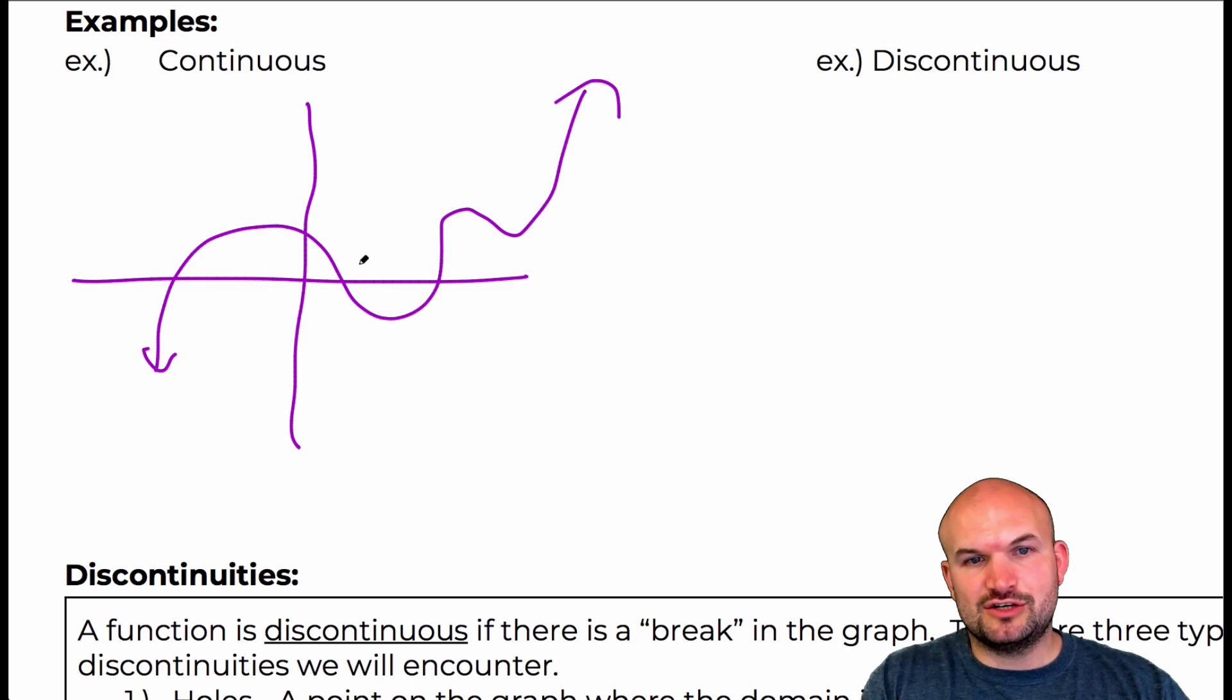So you can see as this graph, as I graphed it, it was like perfectly fine, right? There was no holes, jumps, or issues there.